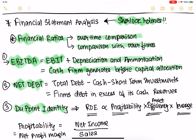Once you know the firm is able to generate cash, if you want to find out net debt — whether the firm can actually service its debt — you look at total debt minus cash minus short-term investments. That gives you the total net debt that the company owes.